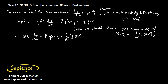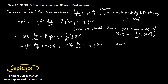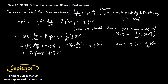Since d/dx[y·g(x)] = g(x)·(dy/dx) + y·g'(x), comparing both sides the g(x)·(dy/dx) terms cancel, giving P·g(x)·y = y·g'(x). Cancelling y from both sides, we get P = g'(x)/g(x).